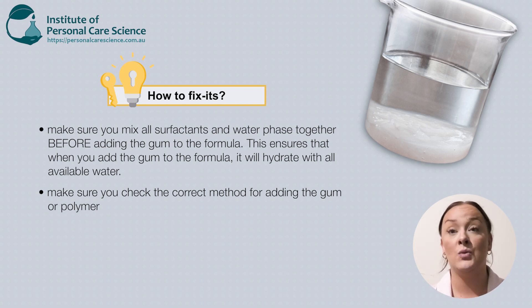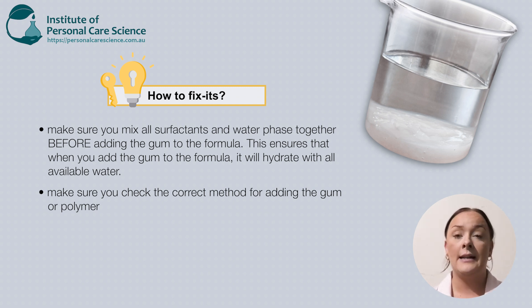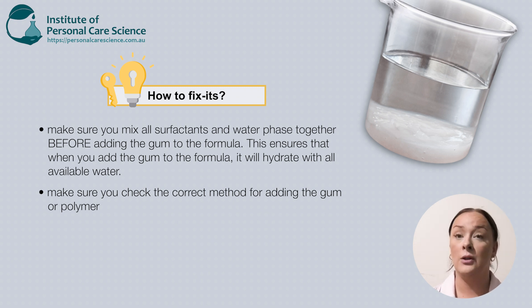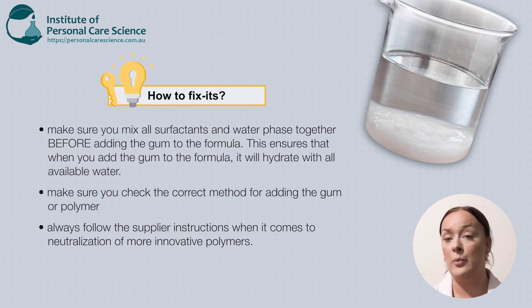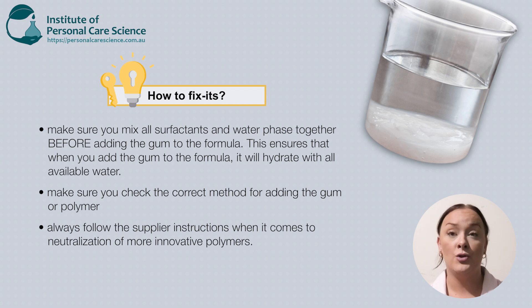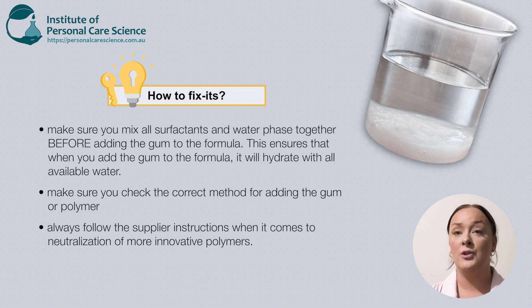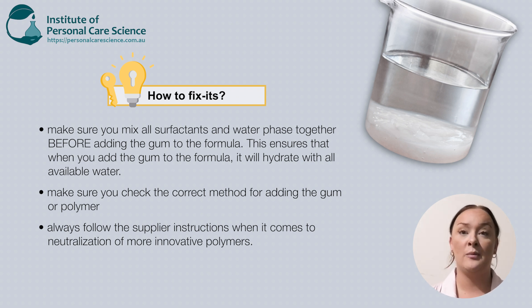Some gums do need to be added to the water phase first, so check the supplier brochures for that information. It's generally added after all water is combined with surfactants, so it's gelling with all available water, as a lot of surfactants come diluted in water themselves. Also check the supplier directions for any pH issues — some gums require certain pH levels, some require neutralization where you're bringing the pH up, and some require acidification where you're bringing the pH down, to ensure they hydrate sufficiently. If in doubt, always contact your supplier or read the brochures.